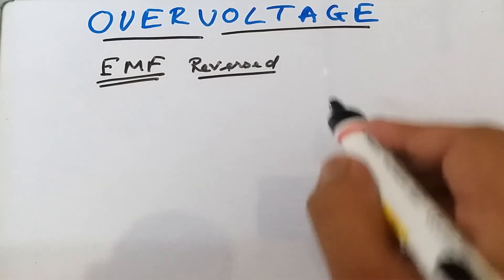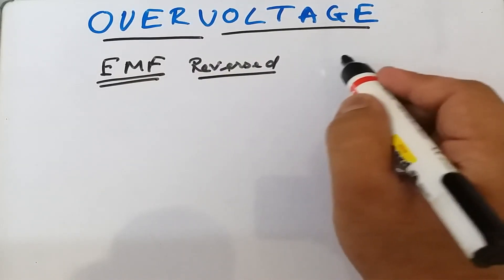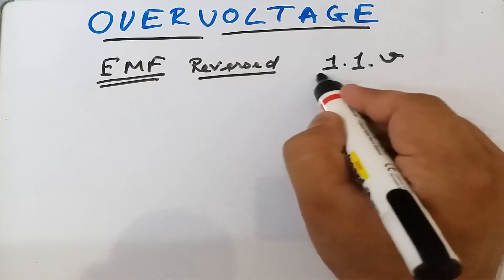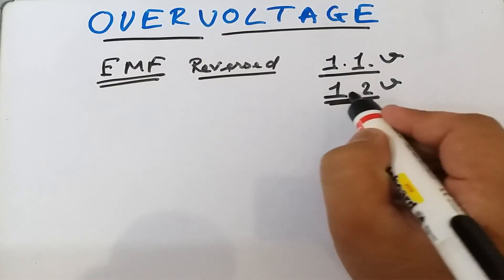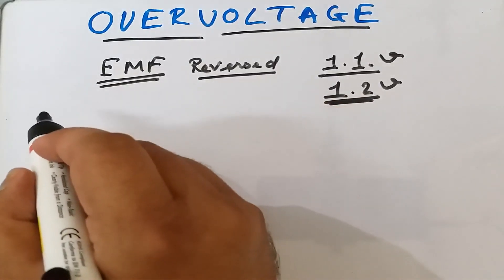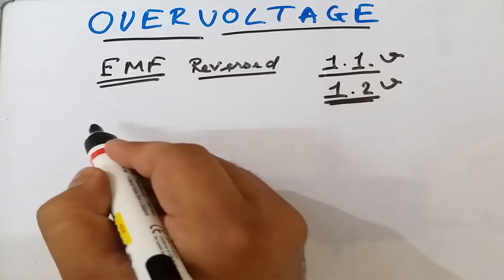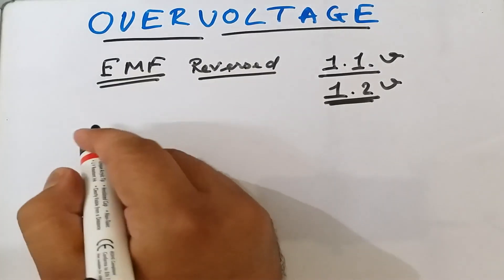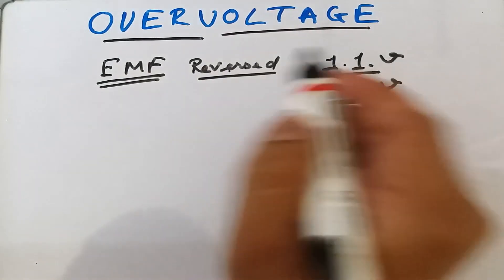Suppose we have a galvanic cell or a voltaic cell. In a galvanic cell, the cell potential is around 1.1 volts, so if we apply 1.2 volts, the cell reactions will be reversed — that is, on the electrode where oxidation was taking place, reduction will now take place, and vice versa. The difference in current is very small.